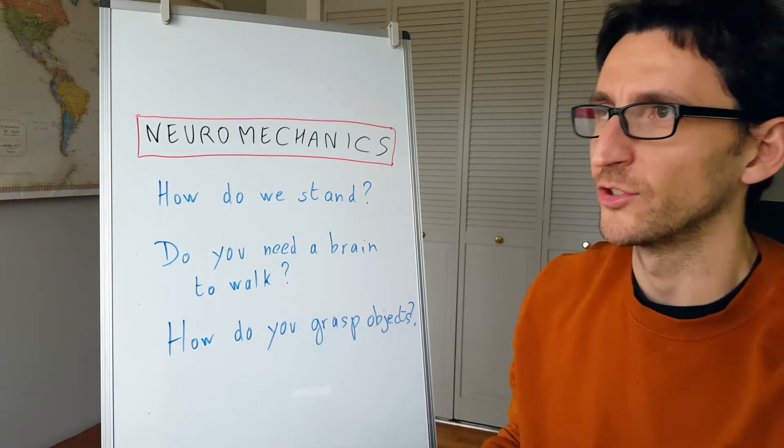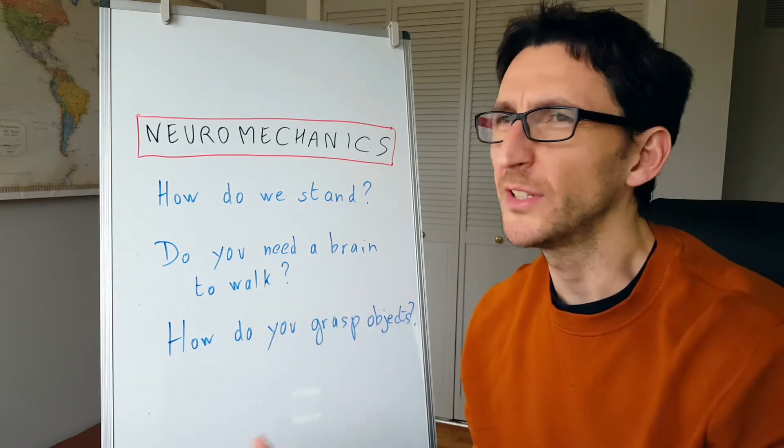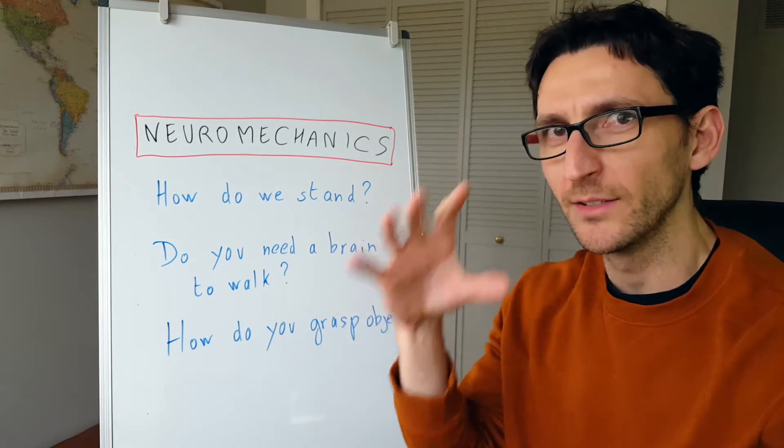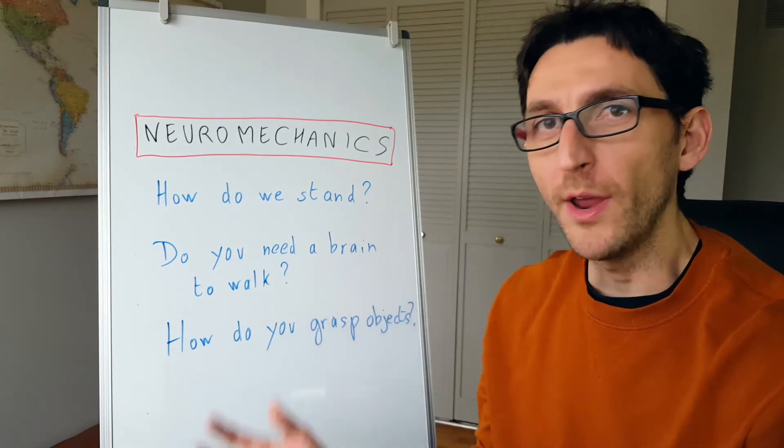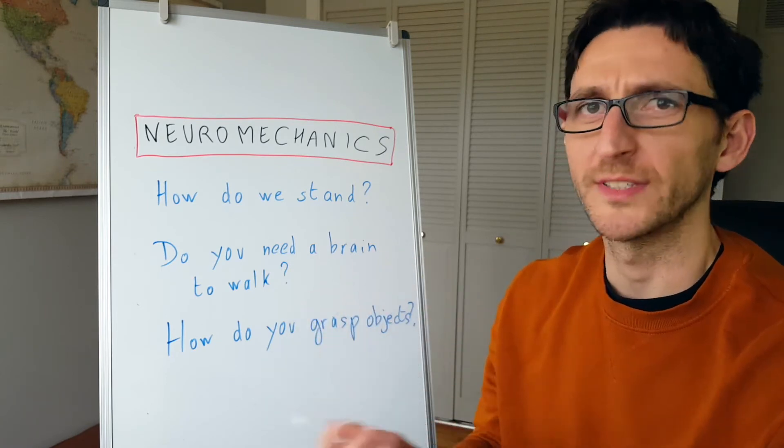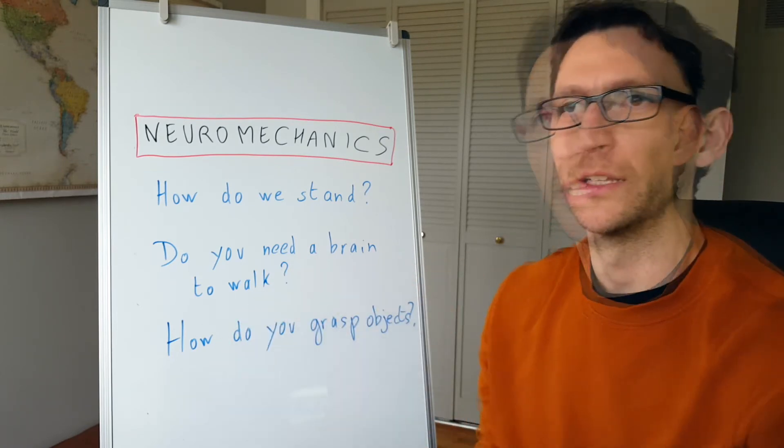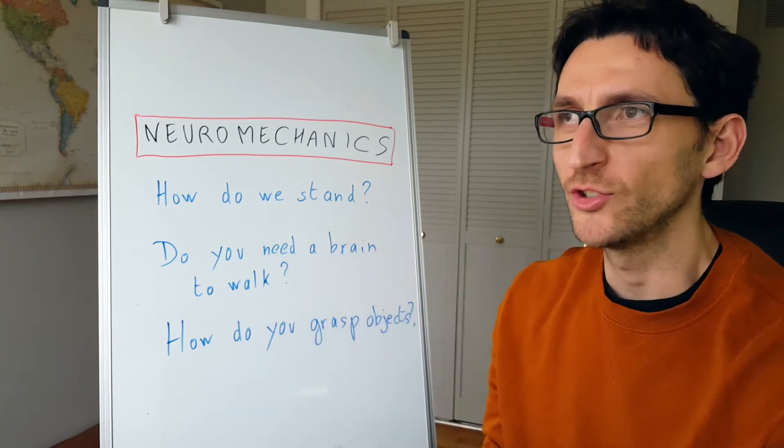It's this interaction between the movement and the nervous system. So we're not studying the brain in isolation. We're not studying the cognitive aspect of the brain, like behavioral neuroscience, cognitive neuroscience, will do and study concepts such as attention or memory.